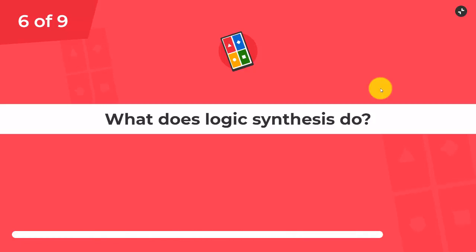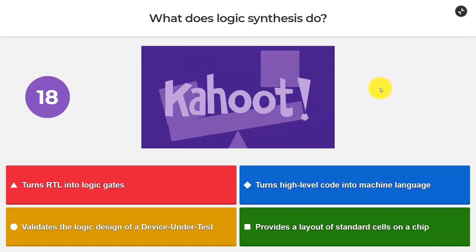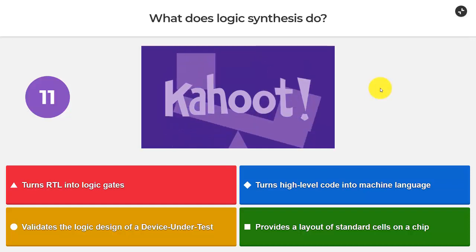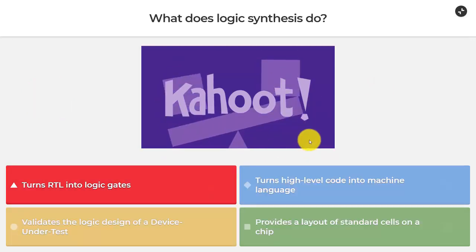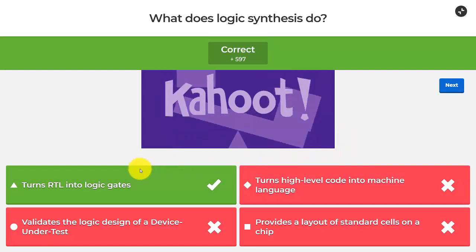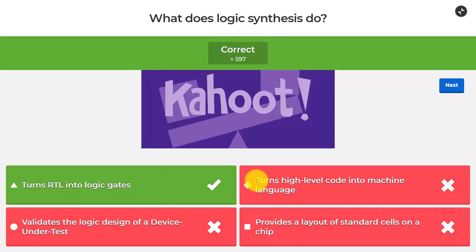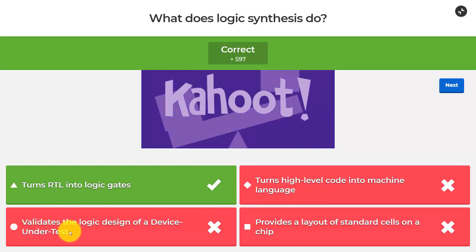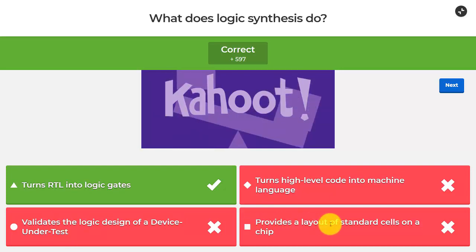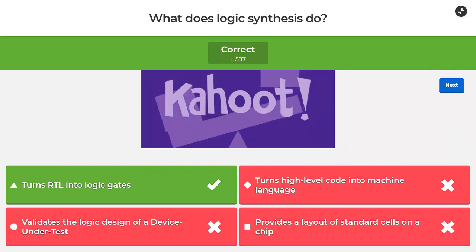What does logic synthesis do? We kind of mentioned that already — it turns RTL into logic gates. That sounds right. Turning high-level code into machine language — I think that's compilation. It validates the logic design of a device under test — that would be verification. It provides the layout of standard cells on a chip — that's placement and route. The right answer is turning RTL into logic gates, and I'm correct again. That is what synthesis is. It's similar to compilation, but compilation is for general purpose programming languages. Validating the logic of a device under test is what we call functional verification. Providing layout of standard cells is what we do during placement and routing.